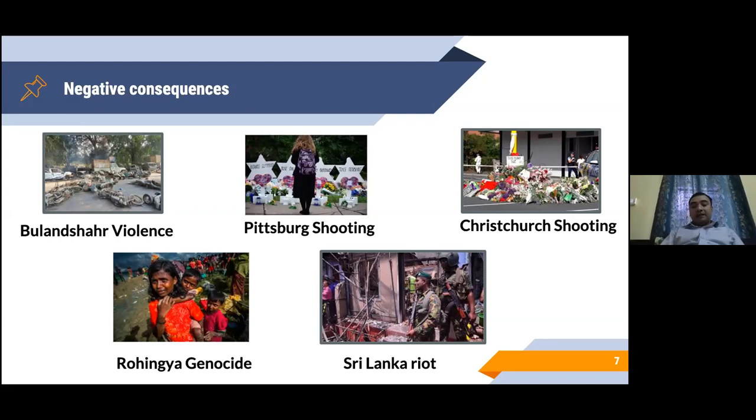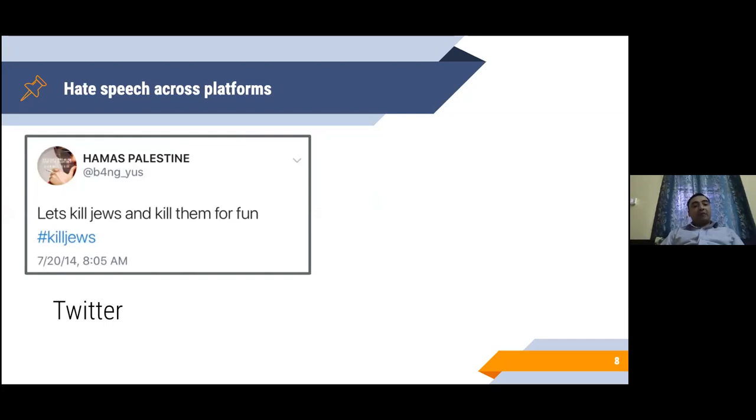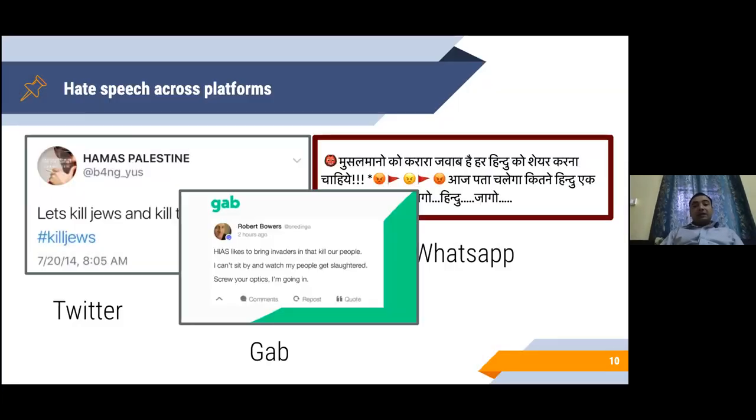This trigger can come from different social media platforms. It could be Twitter, it could be WhatsApp. This is a WhatsApp message that is an offensive and hateful content expressed toward the Muslim community in India. It could be also some very new websites coming up like Gab, which I'll talk about a little more in today's lecture.